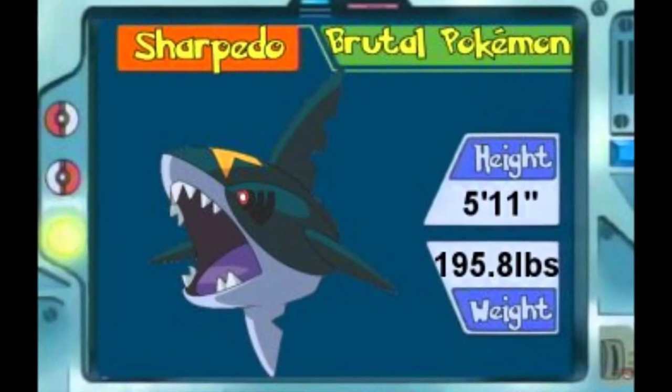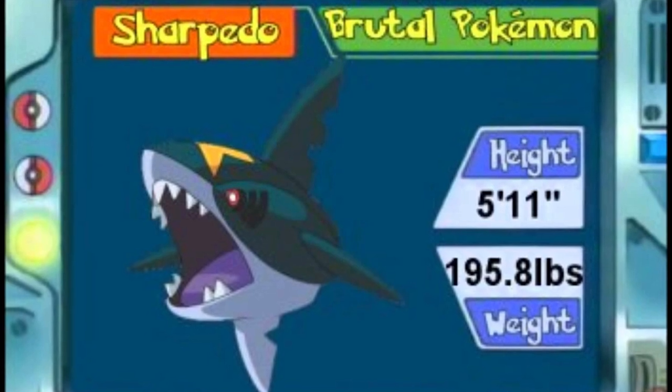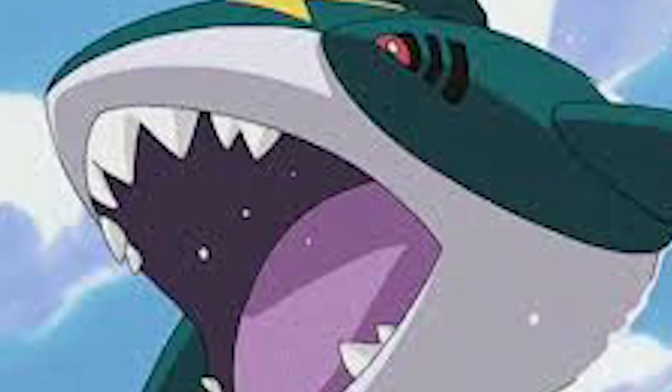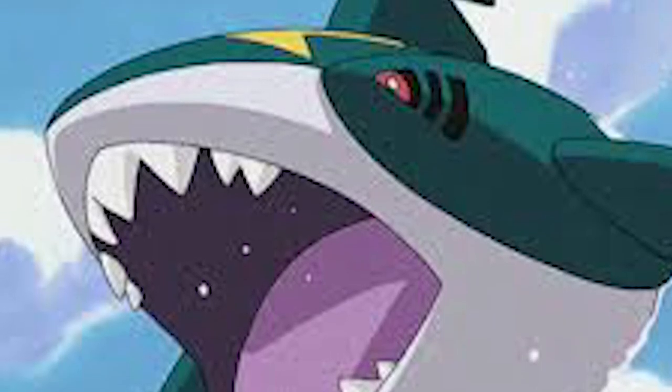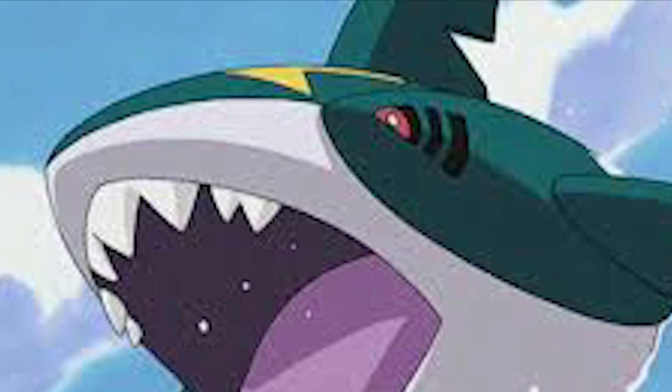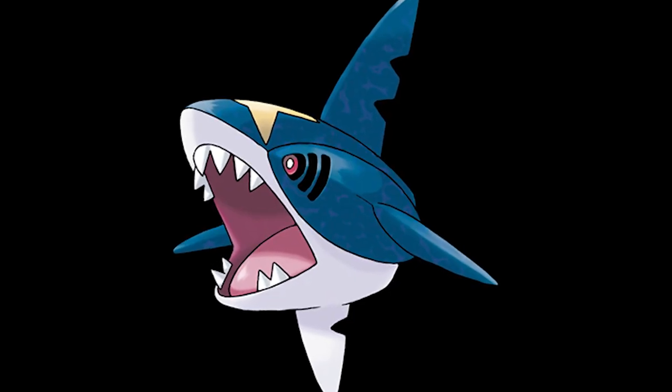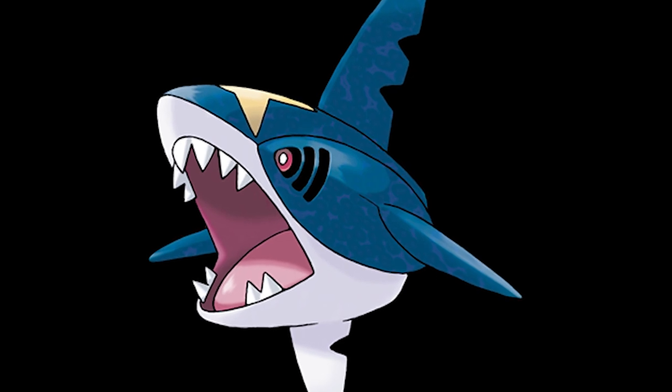Sharpedo is the brutal Pokemon, it's a torpedo shaped shark. It is primarily dark blue with a white underbelly and two yellow star shapes, one on its snout and the other on its rear. Everything in its design, from its fins to its short rear, are made to make this Pokemon look like a torpedo.